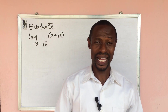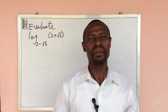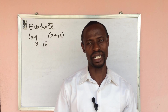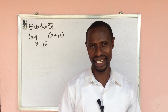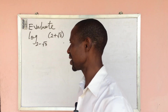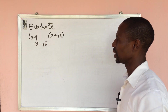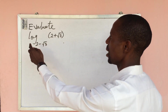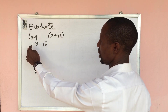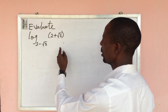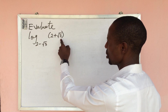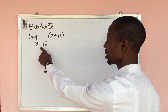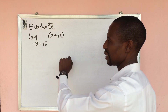Welcome to Online Maths TV. My name is Jake's Animal. This is a channel where you learn mathematics every day. Today we have a very short and simple challenge on logarithms. The question says: evaluate log(2 + √3) base (2 − √3).